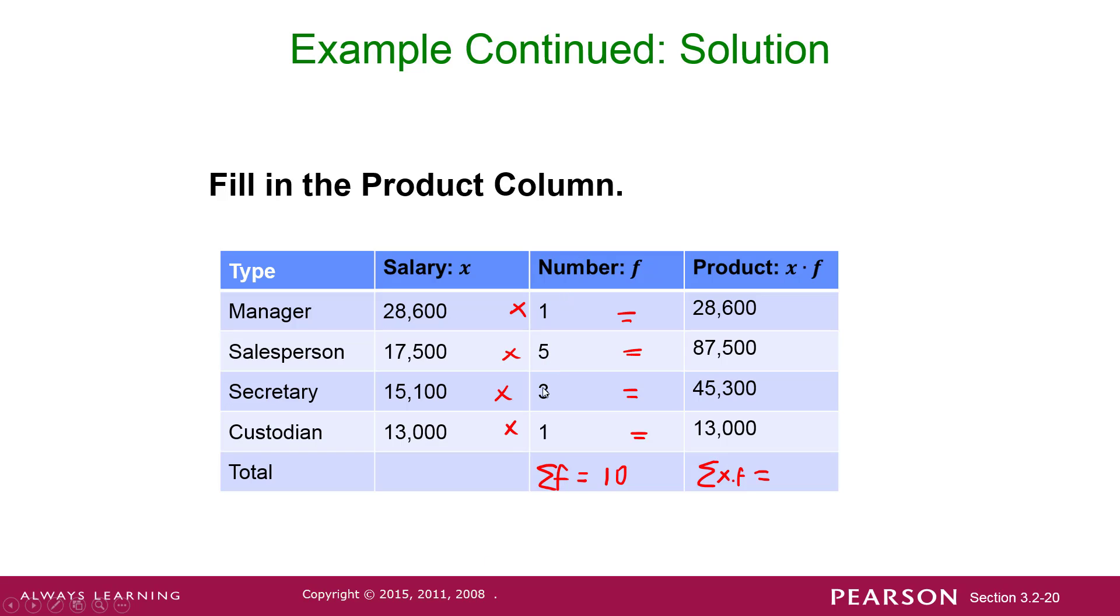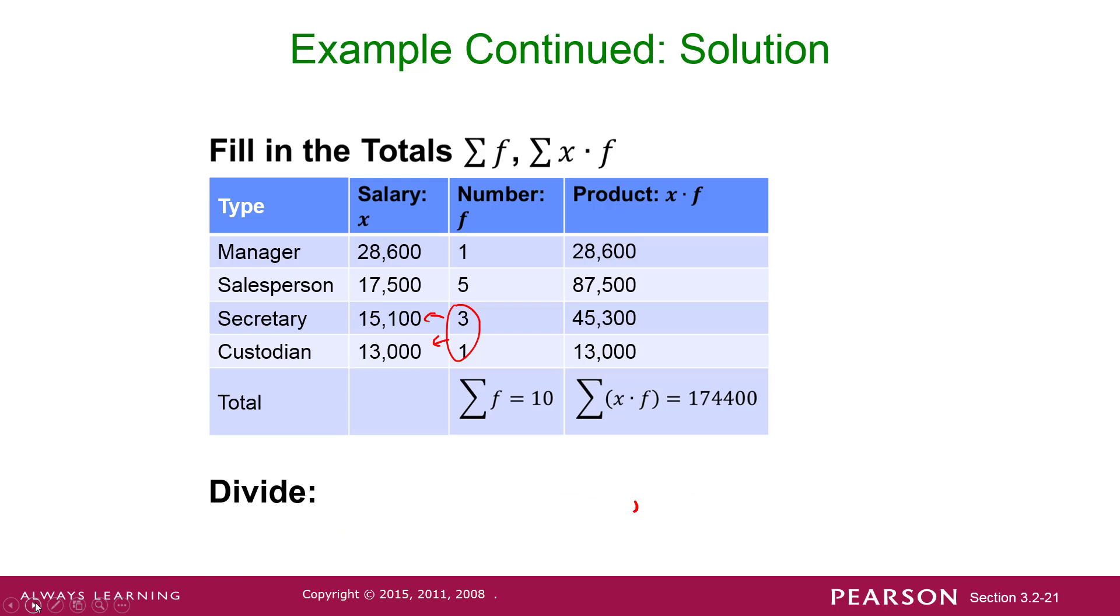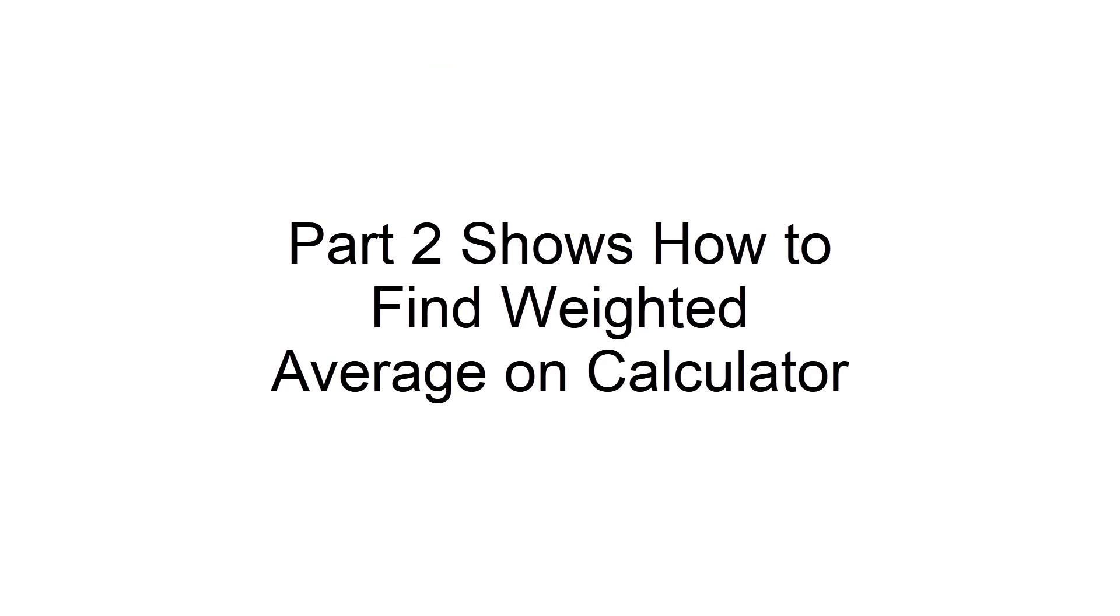Remember we need the sum of the Fs in the denominator, and the sum of the products in the numerator. And so it turned out the sum of the frequencies was 10. The sum of the data values was 174,400, so we just divide. And we ended up with an average salary of 17,440. So that's pretty much where we left off last time. I hope you found this video useful. If you did, please remember to like it.